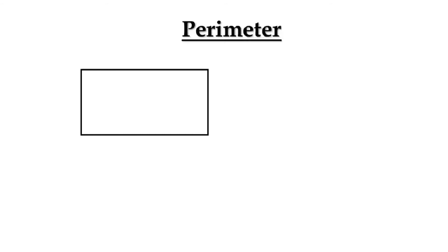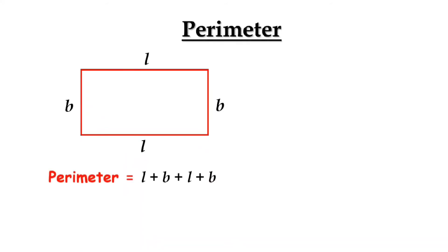Now let us see the perimeter of a rectangle. The perimeter of any plane figure is the length of the boundary of the given figure. So, the perimeter of a rectangle is L plus B plus L plus B, which equals 2L plus 2B. Taking 2 as a common factor, we get 2 times of (L plus B). So, the formula for perimeter is 2(L + B).